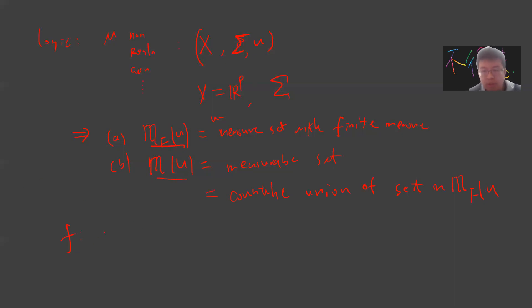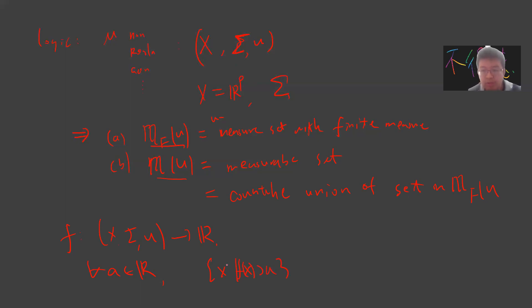Given a function f from a measurable space (X, sigma, mu) to the real numbers, you can define a so-called measurable function. Basically, for every a belonging to the real numbers, if the set {x : f(x) > a} is measurable for every a, then f is called a measurable function.